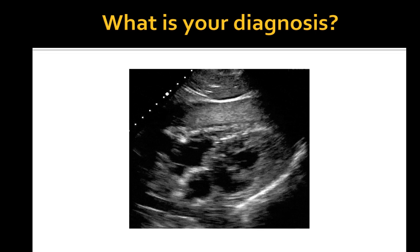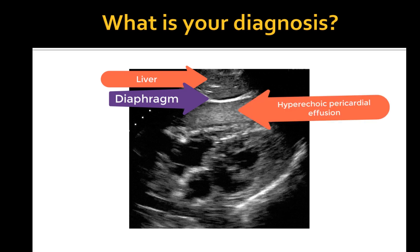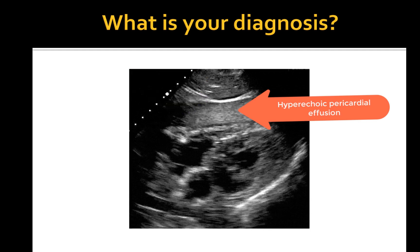Any ideas what's going on here? This is a sub-xiphoid view. The top of the screen represents a portion of the liver, separated by a thick hyperechoic bright line which is the summation of the diaphragm and pericardial sac. Next, there is a thick layer of hyperechoic pericardial effusion. This patient has a hemopericardium and its pericardial space is occupied by clotted blood.